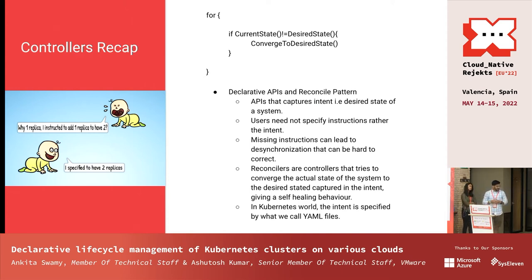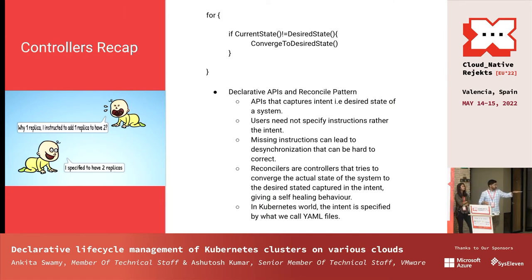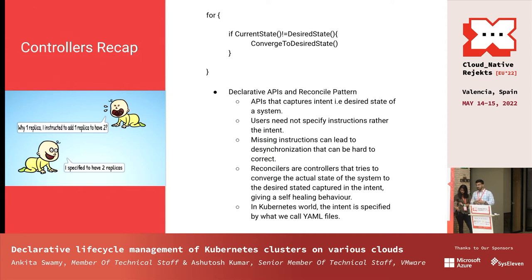You can think of this like pods in a deployment where you declare how many pods you want. This CAPI ecosystem is nothing but a controller based on Kubebuilder. You define your Kubernetes infrastructure in YAML, do a kubectl apply of that YAML, and it provisions your Kubernetes cluster on the desired infrastructure.